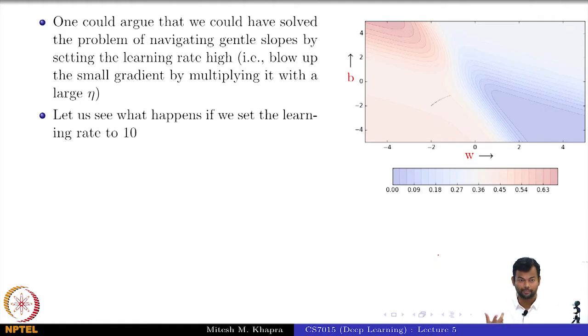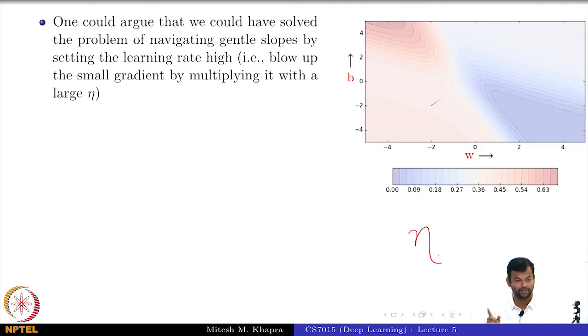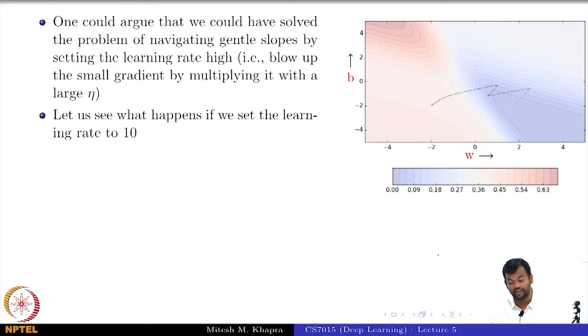I will see what happens when I take eta equal to 10. This is step 1, step 2, step 3. It is moving very fast on the regions where the slope is gentle, but it also moves very fast on the regions where the slope was already steep, right. When the gradient was actually high, you ended up blowing it further by multiplying it with an eta which is 10.